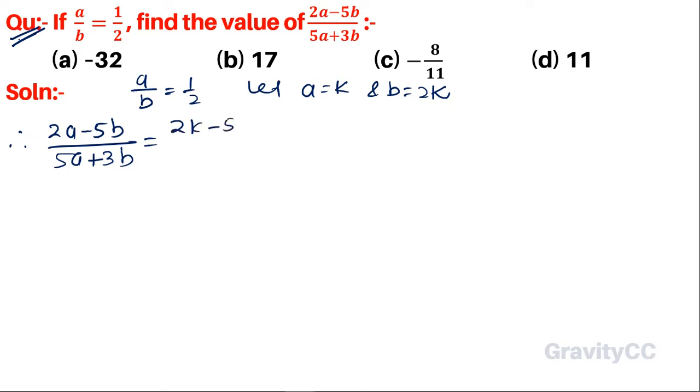This becomes (2k - 10k)/(5k + 6k), which equals -8k/11k.